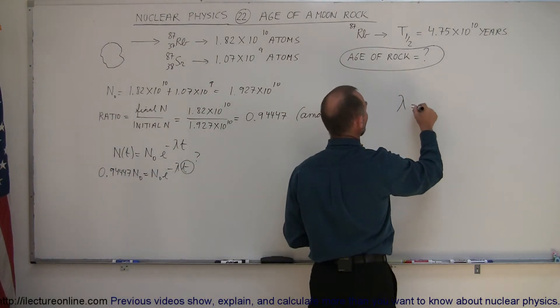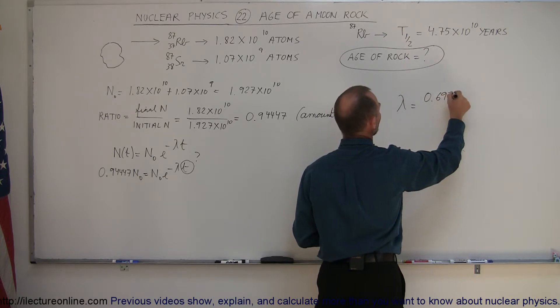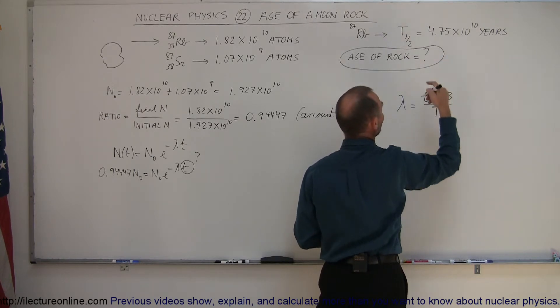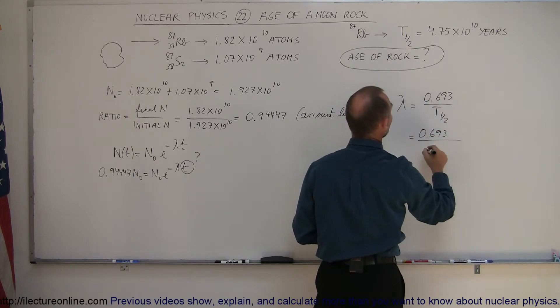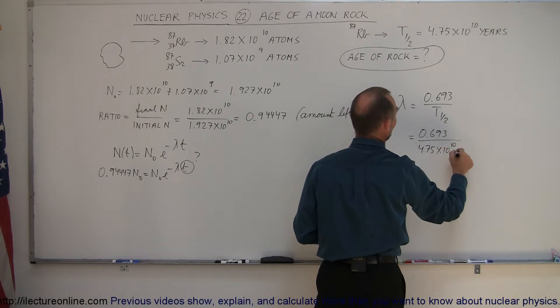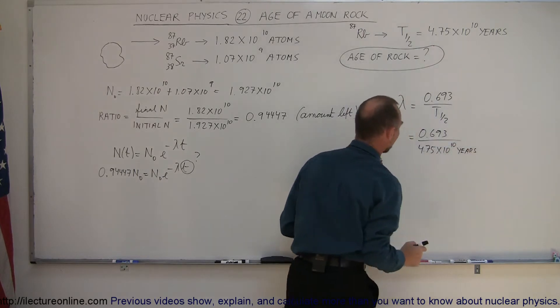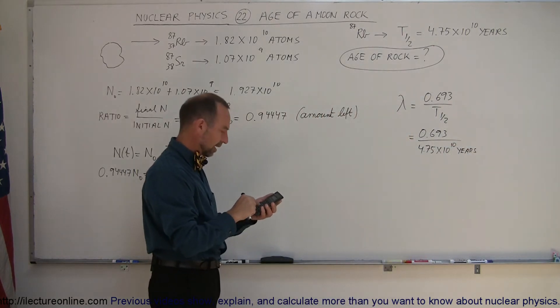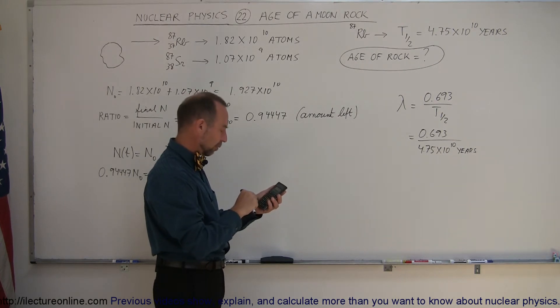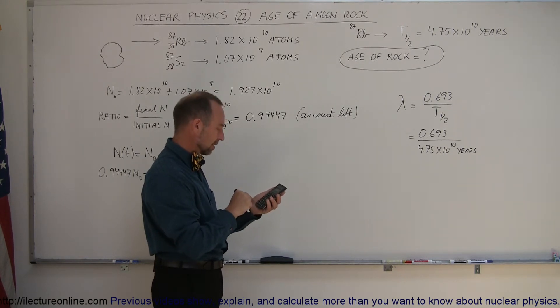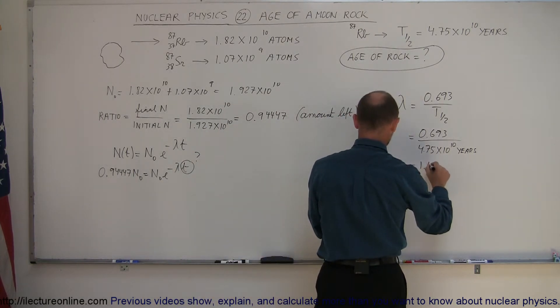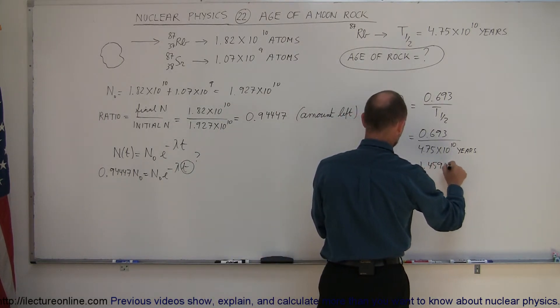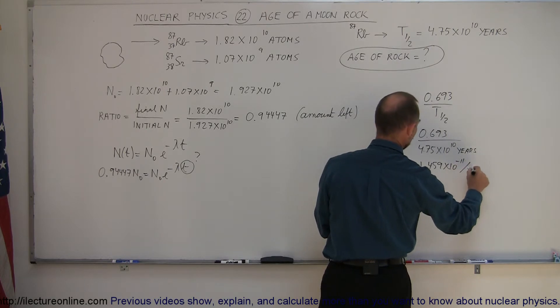The decay constant is equal to 0.693 divided by the half-life. And we have the half-life in terms of years. So this is equal to 0.693 divided by 4.75 times 10 to the 10th years. Okay, so 0.693 divided by 4.75 E to the 10th, and that gives us 1.459 times 10 to the minus 11 per year.